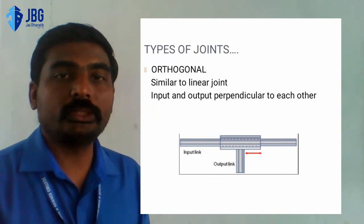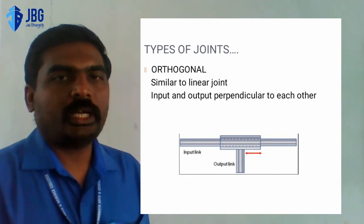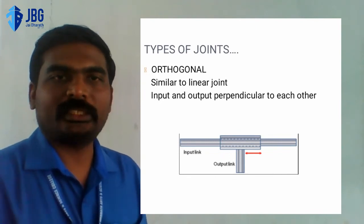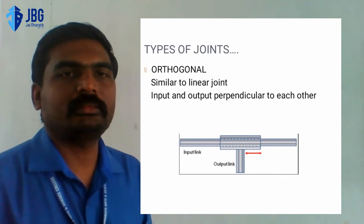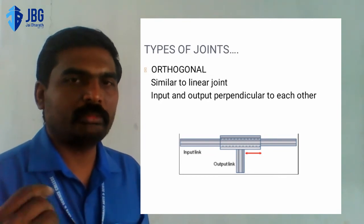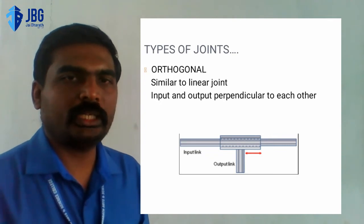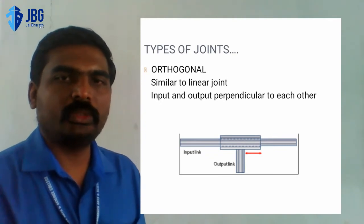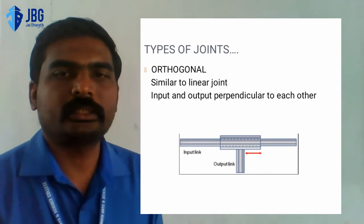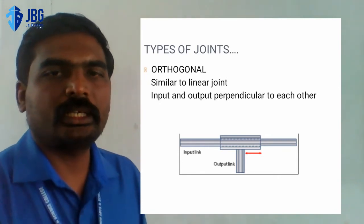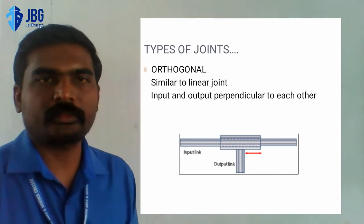Another type of prismatic joint is the orthogonal joint. Similar to a linear joint, the input and output are perpendicular to each other. Using this joint, you can move the output link through the input link. You can see the diagram of an orthogonal prismatic joint.